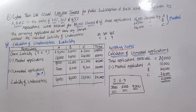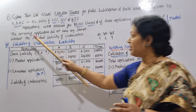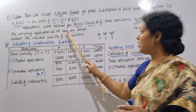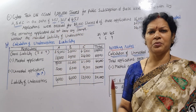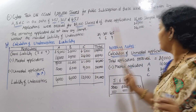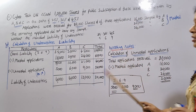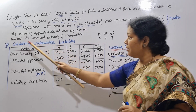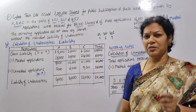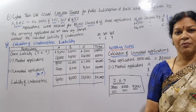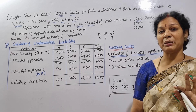The remaining applications did not bear any stamps — they were unmarked applications. We need to work out the individual liability of each underwriter.